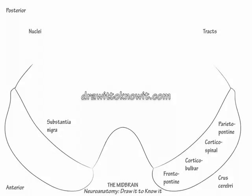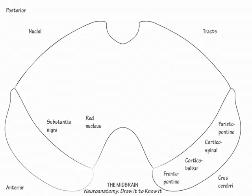Now include the tegmentum of the midbrain. In its ventral portion, draw the circular red nuclei just off midline. The red nuclei receive fibers from both the motor cortex and cerebellum and project rubrospinal fibers down the spinal cord.